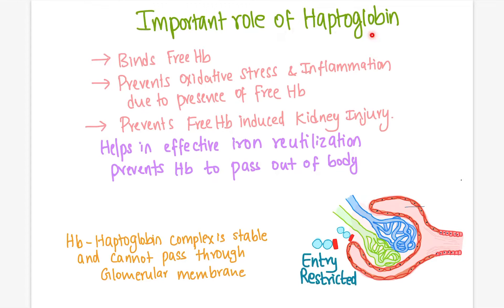So the important roles of haptoglobin are: to bind with free hemoglobin, prevent oxidative stress and inflammation caused by free hemoglobin, prevent free hemoglobin-induced kidney injury, and help in efficient utilization of iron. Since hemoglobin contains iron — which is crucial for erythropoiesis — if hemoglobin is excreted, the body loses a lot of iron. Haptoglobin helps to salvage that iron and prevent its loss.